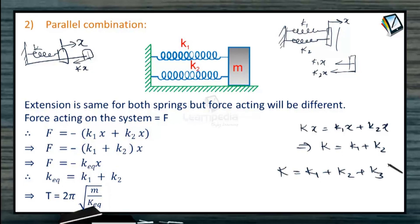So after cancelling X, we get K equals K1 plus K2 and the same result goes for more than two springs also, K1 plus K2 plus K3. This means in parallel combination spring constants are directly added. So here as you can see that there are two springs connected. So time period has to be 2 pi under root M by K. K is K1 plus K2. So in parallel combination, we can directly add the spring constants to get the equivalent spring constant.